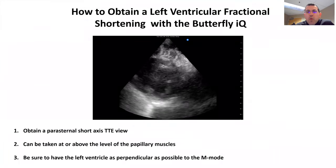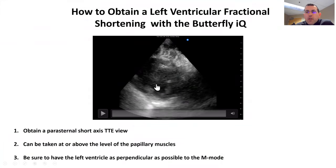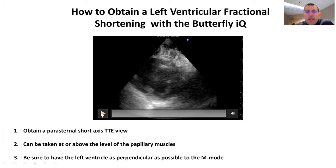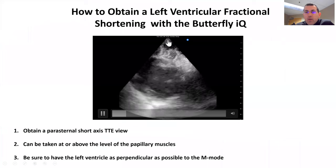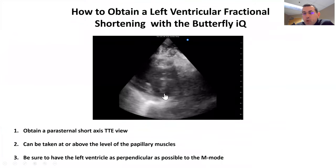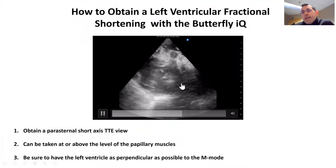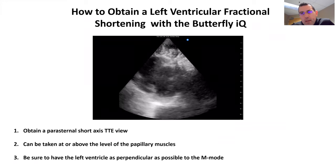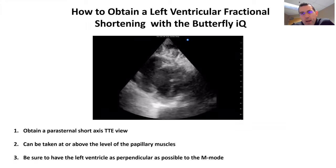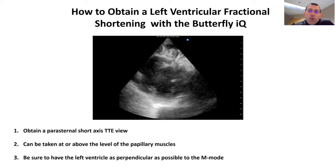The first thing we want to do to determine ejection fraction with the fractional shortening method is to get a parasternal short axis view. Here I show you a typical parasternal short axis view. Intentionally, we don't show you the best parasternal short axis view we've ever gotten — that's because we're critical care doctors. Oftentimes we can't get the best views in the ICU for numerous reasons: patients on the ventilator, they can't position.